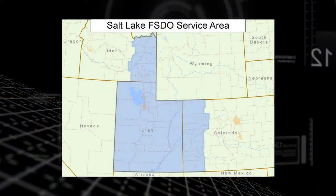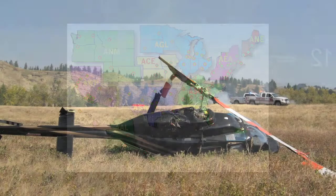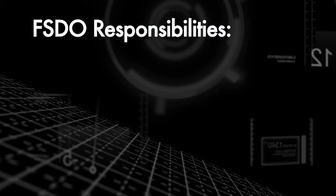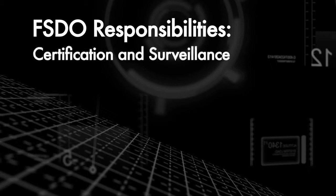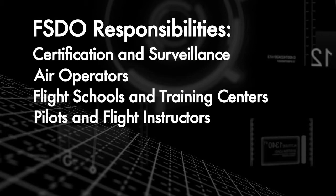The interface between the FAA and the aviation community and general public is the Local Flight Standards District Office, or FISDO. The FISDOs are located across the United States, each having jurisdiction over a specific geographic area. In addition to accident investigation and enforcement of aviation regulations, an individual FISDO is responsible for the certification and surveillance of air carriers, air operators, flight schools and training centers, and airmen including pilots and flight instructors.